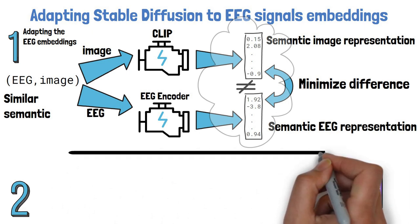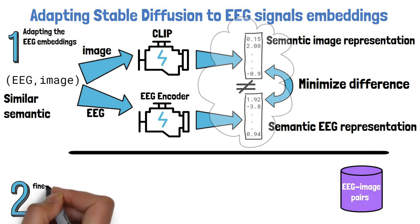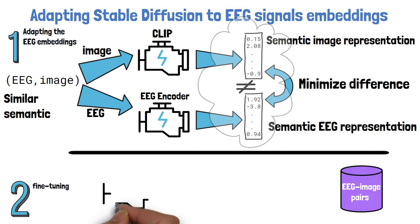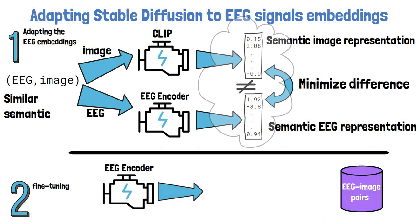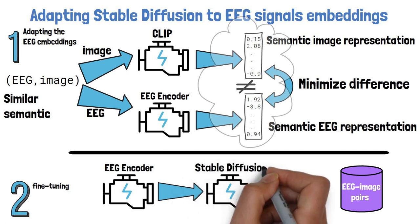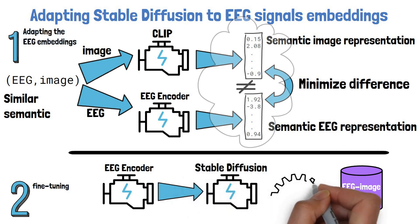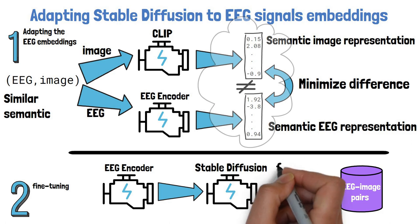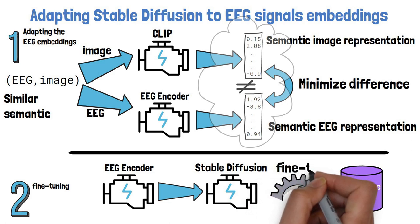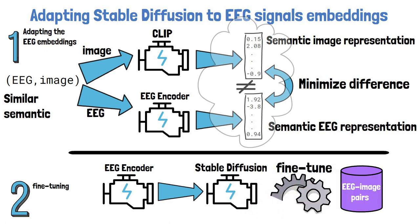The second thing they did is fine-tuning. They fine-tuned Stable Diffusion and the EEG encoder together over the EEG-image pairs dataset, this way adapting Stable Diffusion further to work properly for EEG encodings.